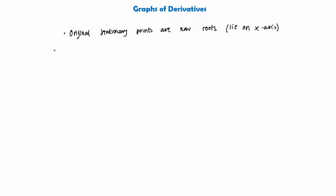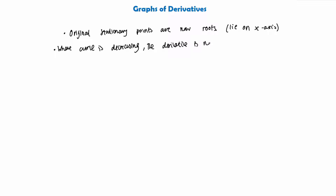The second thing we want to know is that wherever the curve is strictly decreasing, the derivative is negative. So the graph of the derivative will lie below the x-axis. If our curve is decreasing as it goes down, wherever it is decreasing, the derivative is negative and the graph of the derivative will lie below the x-axis.